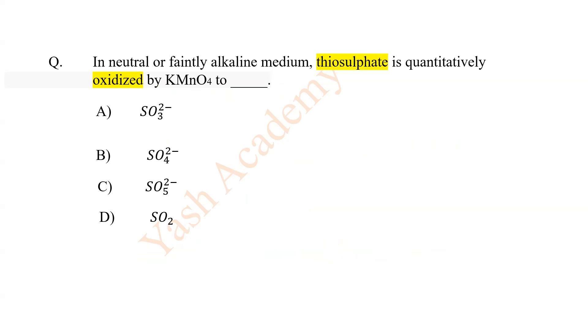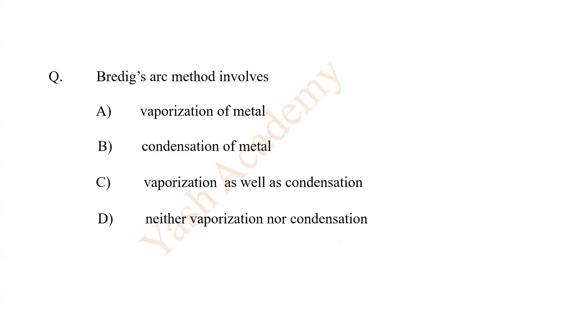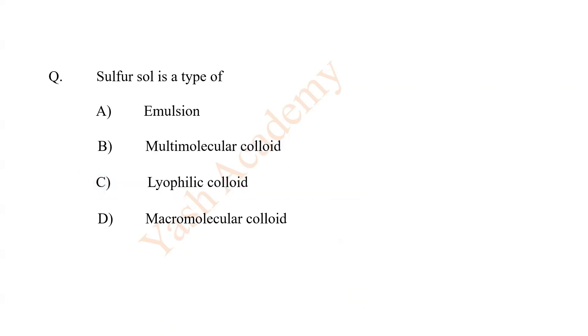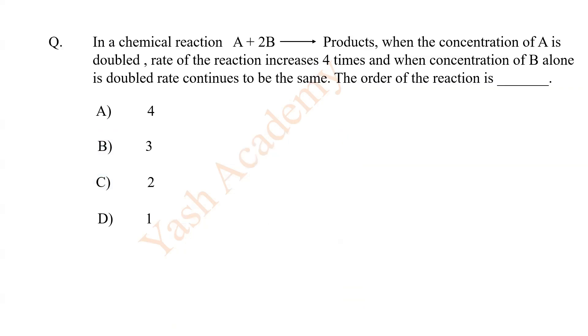In neutral or faintly alkaline medium, hyposulphate is quantitatively oxidized by KMnO4 to B, sulfate ion. Bradig's Arc method involves vaporization as well as condensation. Sulphur-Sol is a type of B, multimolecular colloid.